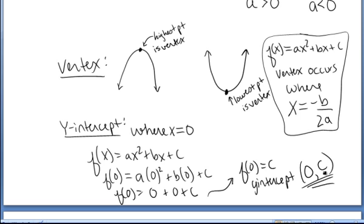That tells us the y-intercept is the point zero comma c. Notice then, in the formula f of x equals ax squared plus bx plus c, the constant term c is the y-intercept of the function.